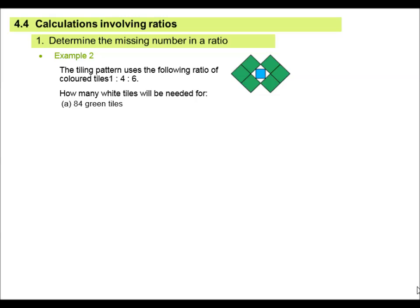Calculations involving ratios. For example, determine the missing number in a ratio. If we look at this floor tiling pattern, we can see that there's one blue tile, four white tiles and six green tiles. So we will see the ratio 1 to 4 to 6. The one was blue, the four was white and the six was green. How many tiles will be needed for 84 green tiles? What I'm going to show you now is a method I suggest you learn because ratio calculations pop up so often in Mathslit.